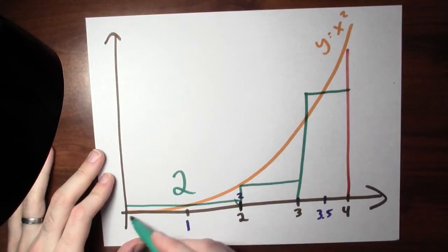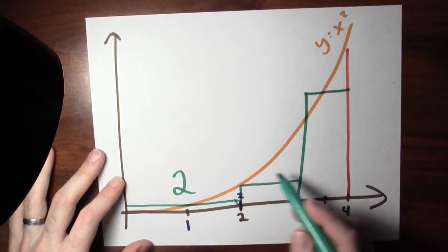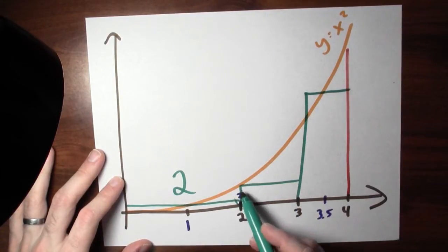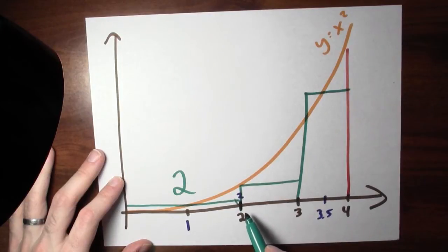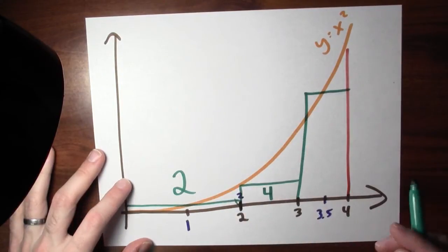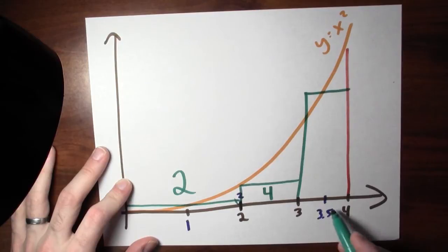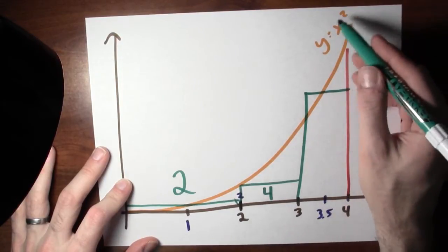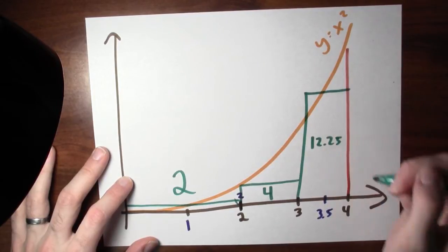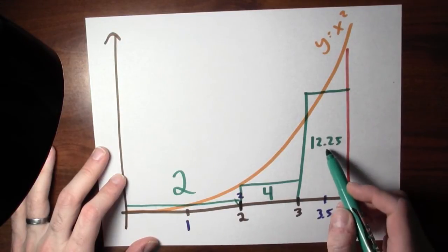What's the area of those rectangles? This first rectangle has area 2, because it has a width of 2 and its height is 1 squared — I'm sampling at the point 1 and the function is the squaring function, so its height is 1 and width is 2, giving area 2. The next rectangle has width 1 and height 4, because the sample point is 2 and 2 squared is 4, so this rectangle has area 4. This last rectangle has width 1 and height 3.5 squared, and 3.5 squared is 12.25.